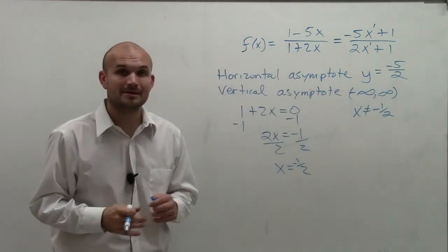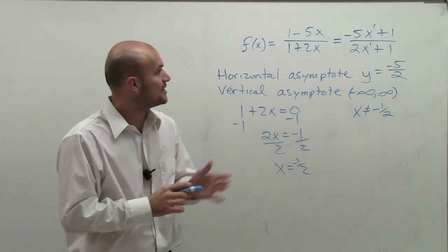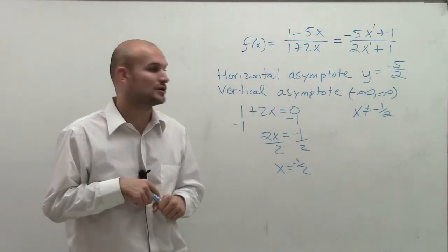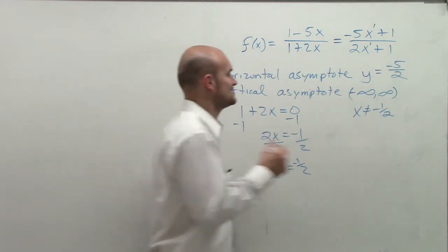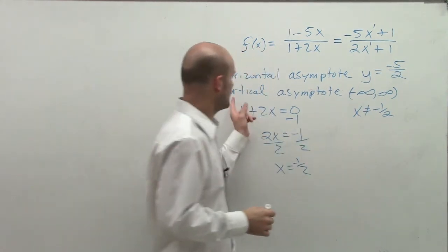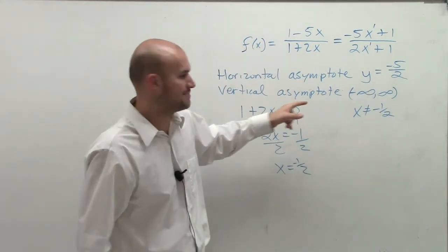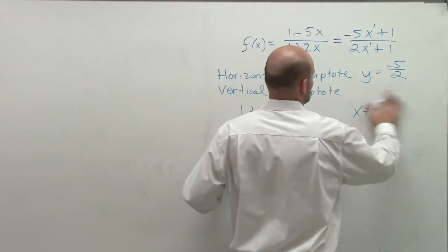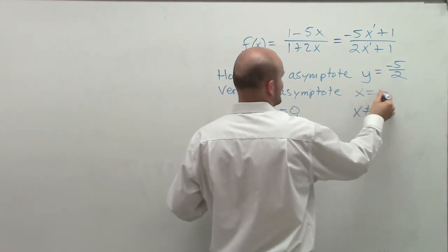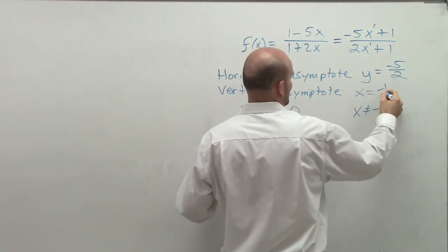So there you go, ladies and gentlemen. That is how you find the horizontal and vertical asymptote as well as your vertical asymptote. Well, it says your domain, but I didn't write it out there.